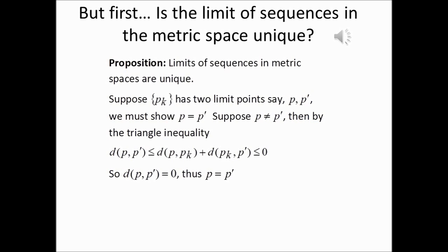Suppose that p sub k has two limit points — call them p and p prime. Then we know by the triangle inequality that the ordinary distance between p and p prime is going to be less than or equal to the ordinary distance between p and the k-th term of the sequence, plus the ordinary distance between the k-th term of the sequence and p prime. Because the sequence has two limit points, p and p prime, in the large k limit the ordinary distance between p and the k-th term goes to 0, and the ordinary distance between the k-th term and p prime also goes to 0.